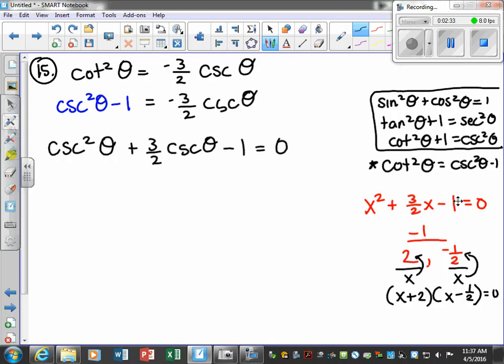Okay, so now what we want to do is use this information. Now everywhere there's an x, we're going to put cosecant theta there. So let's rewrite this. So now we're going to use our factors over there to rewrite it as cosecant theta plus two. That's this first one. Now we're going to have cosecant theta minus a half. It's equal to zero.